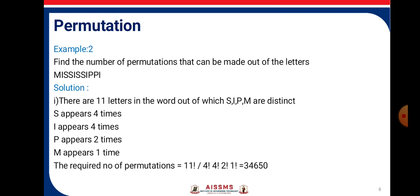Consider the second example. Find the number of permutations that can be made out of the letters MISSISSIPPI. There are 11 letters in the word out of which S, I, P, M are distinct. S appears 4 times, I appears 4 times, P appears 2 times, M appears 1 time.